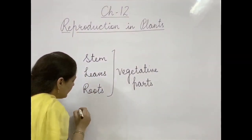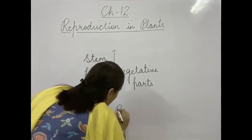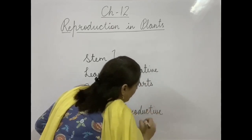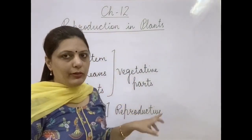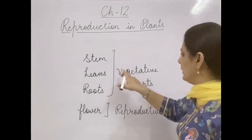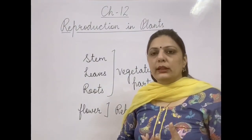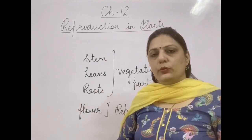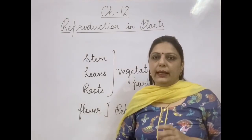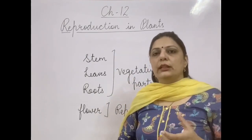The flower is helpful in the production of seeds, so it is considered the reproductive part of a plant. Since not all plants have flowers, not all plants have a reproductive part, and in those cases reproduction occurs with the help of vegetative parts. For example, during spring season you notice many flowers on a mango tree, and with the passage of time those flowers get converted into mango fruit, inside which there is a seed.